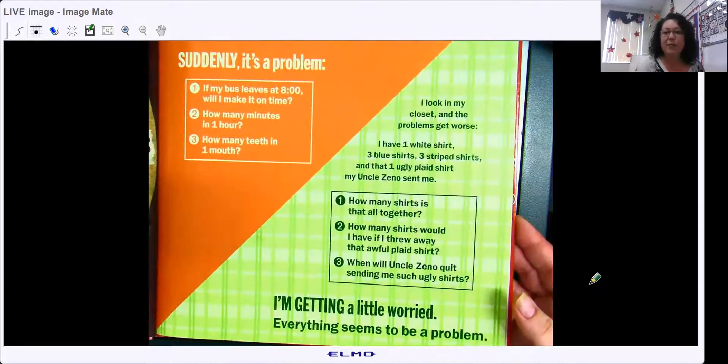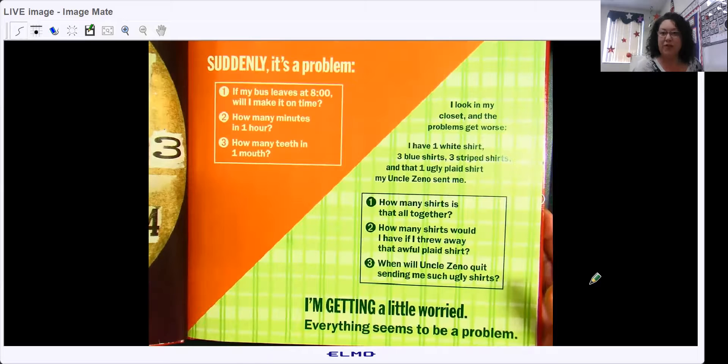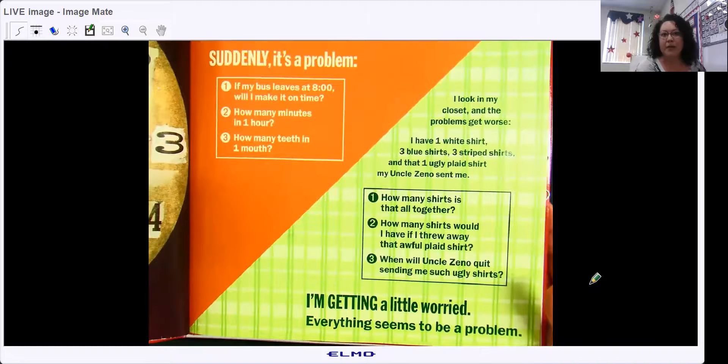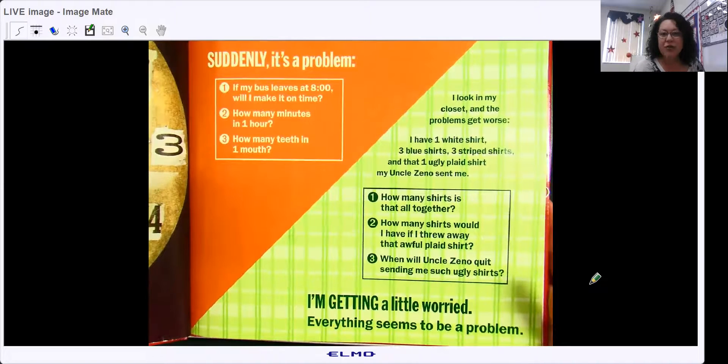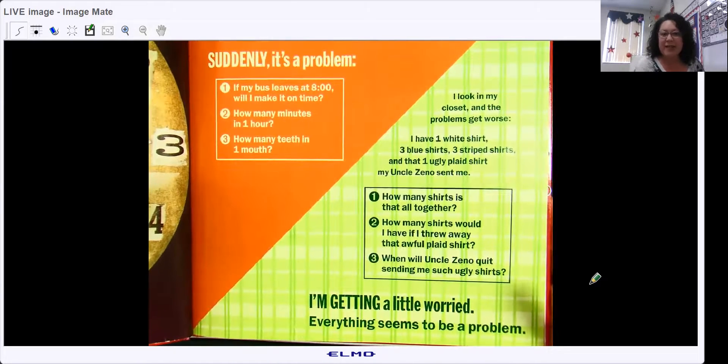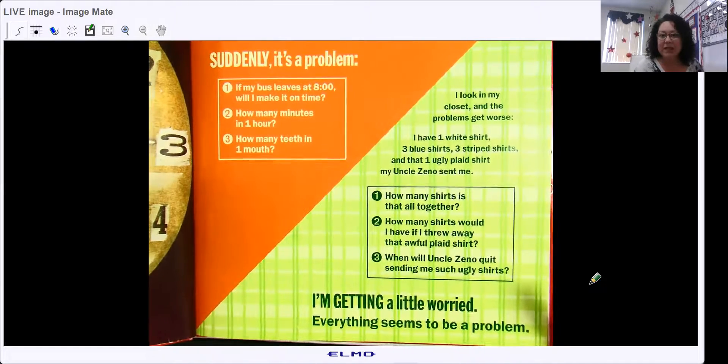I look in my closet, and the problems get worse. I have one white shirt, three blue shirts, three striped shirts, and that one ugly plaid t-shirt that my Uncle Zeno sent me. How many shirts is that all together? How many shirts would I have if I threw away that awful plaid shirt? When will Uncle Zeno quit sending me such ugly shirts? I'm getting a little worried. Everything seems to be a problem.